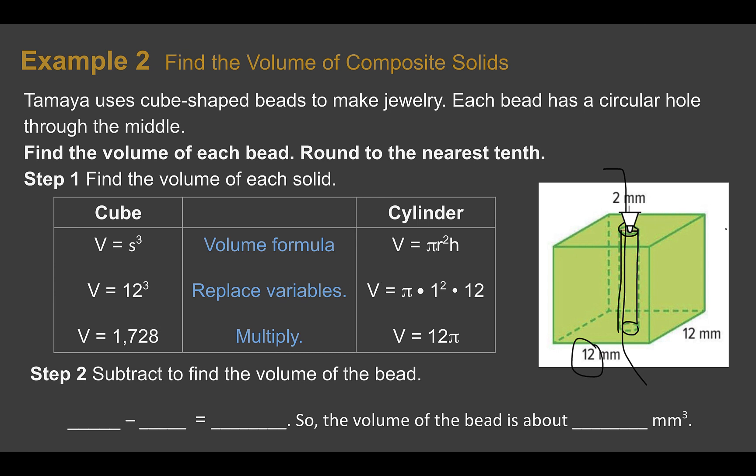Now, for the cylinder, it gives us the diameter is 2. So the radius is 1, 1 to the second power is 1, times 12 is 12. The volume of that cylinder that we're taking out of the bead is 12π. Now, this time, we're not adding them together, we're subtracting. So 1,728 minus 12π is about 1,690.3, meaning our volume is about 1,690.3 cubic millimeters.